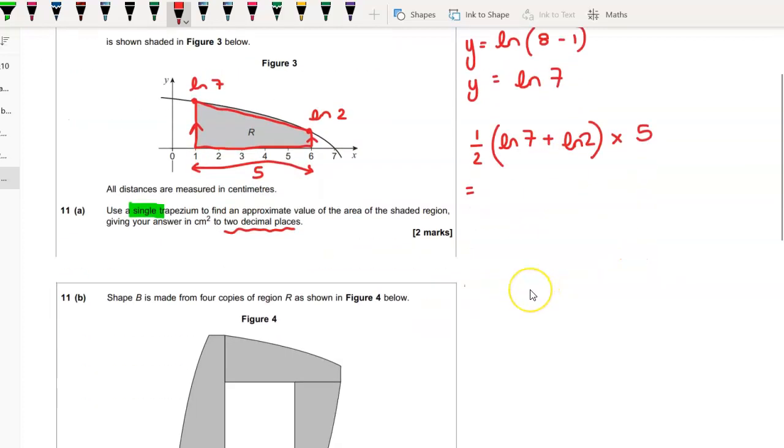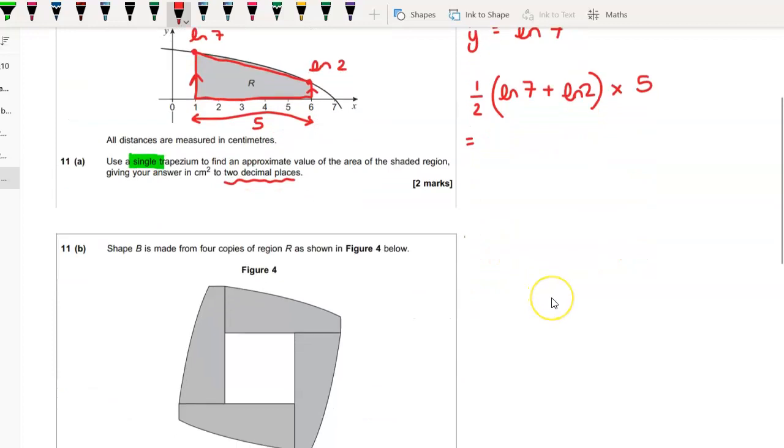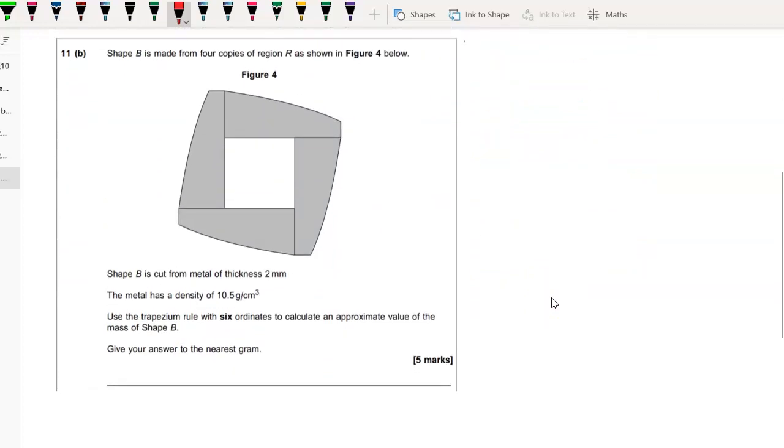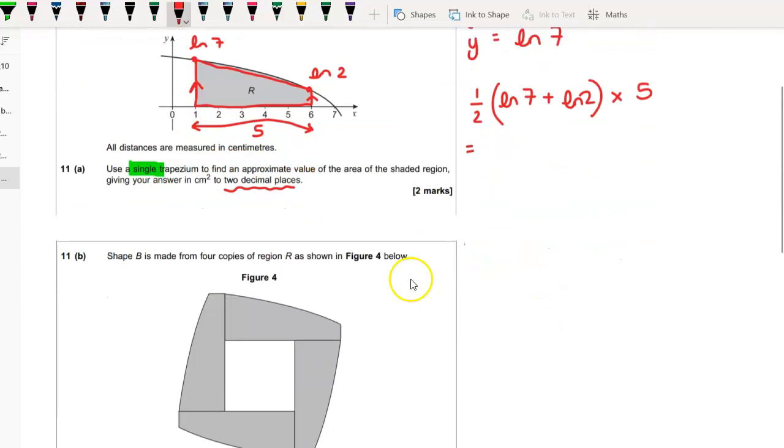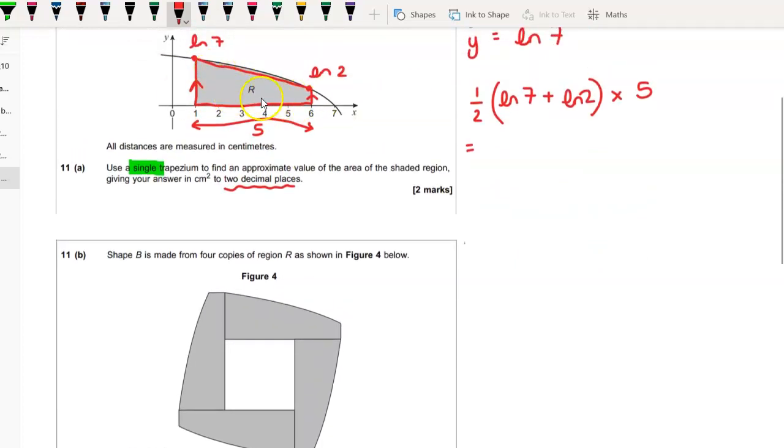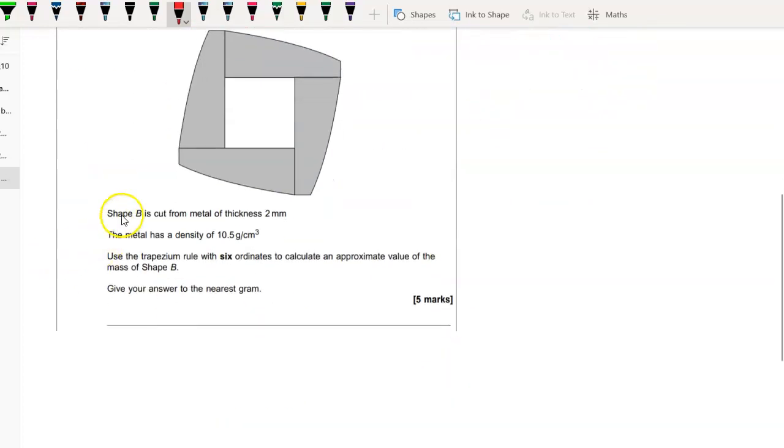Right, now shape B is four copies of the region R as above. So basically you've just got four of these. It's going to be cut from a metal of thickness two millimeters.